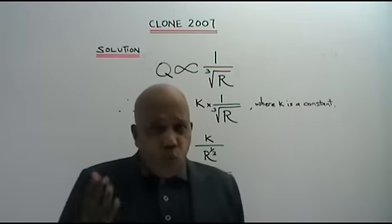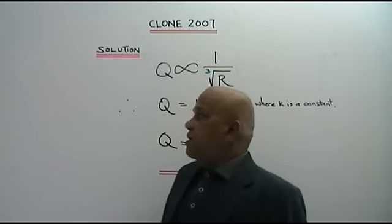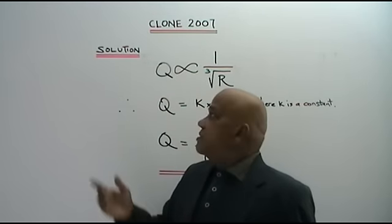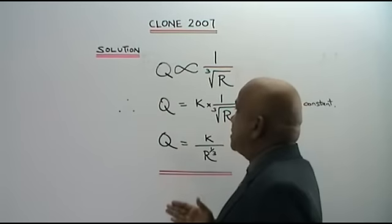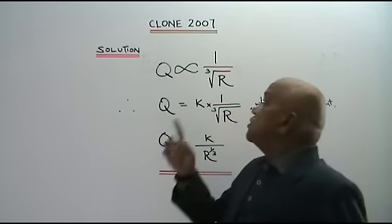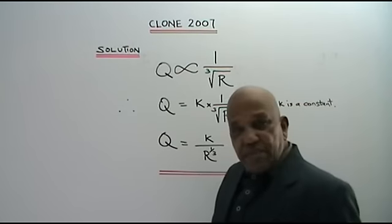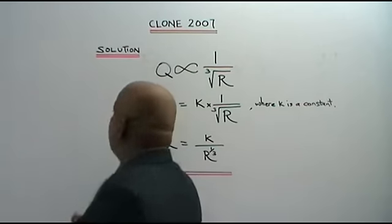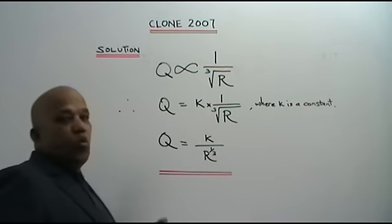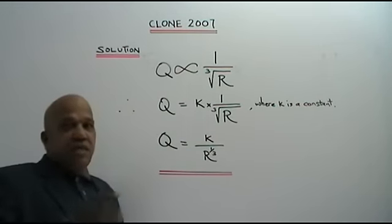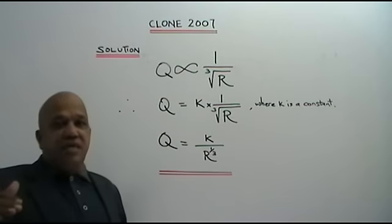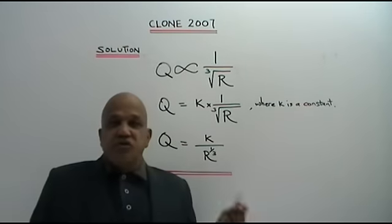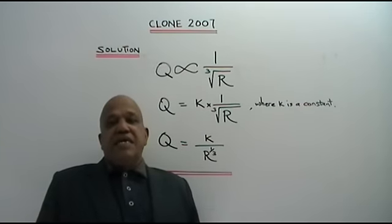Hi, welcome to the topic of inverse variation. Here I have a clone question based on the year 2007, paper 1, SPM. You are given that Q varies inversely as the cube root of R, and you are also given that the constant is K.